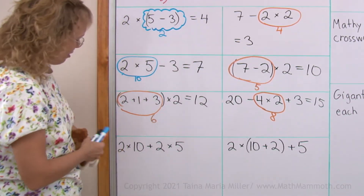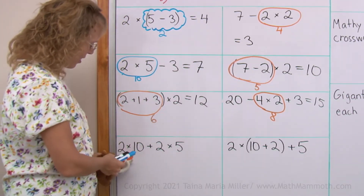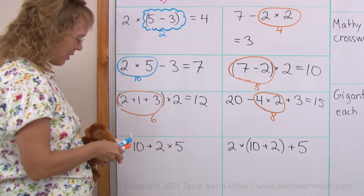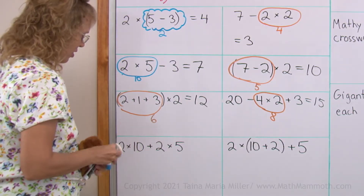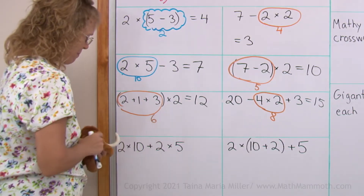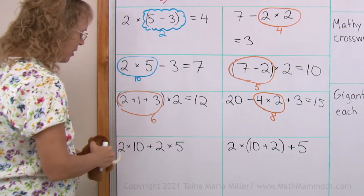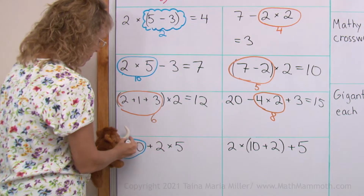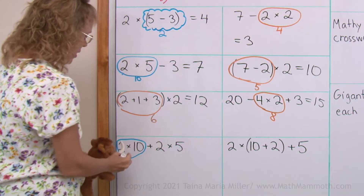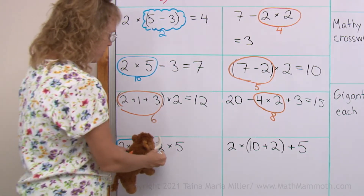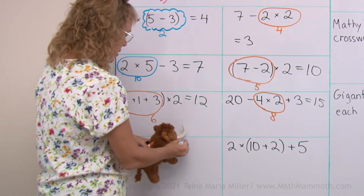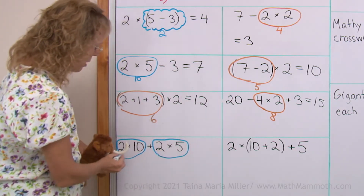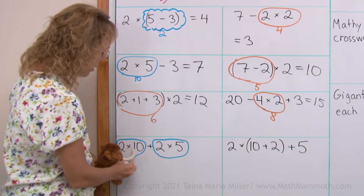What shall we solve first here, Matthew? Show us. 2 times 10 plus 2 times 5 — that gets done first, and that one too. 2 times 10 is 20.